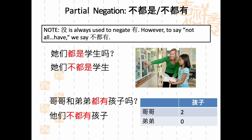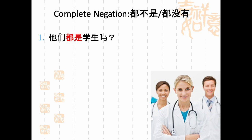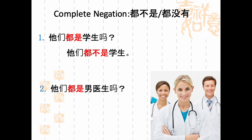Let's get more practice with the complete negation. 他们都是学生吗？We know none of them are students, so we say 他们都不是学生. What about this one: 他们都是男医生吗？男医生 means male doctor. We would respond with a partial negation — 他们不都是男医生 — not all of them are male doctors; we only have one male doctor, in fact.